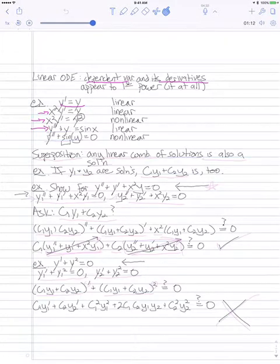Here we have y double prime plus y equals sin x. Although sin x is a nonlinear function, it's a nonlinear function of the independent variable. So if we look at this stuff involving the dependent variable, it's still linear.